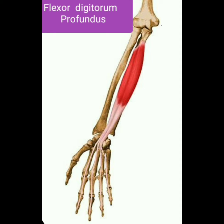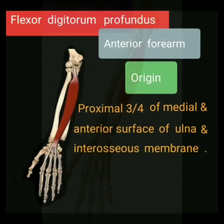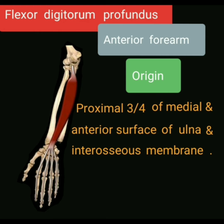Assalamu alaikum, welcome to my new video. In this video I will discuss the anatomy of flexor digitorum profundus muscle. The flexor digitorum profundus muscle originates from the proximal three-quarters of the medial and anterior surface of the ulna and the interosseous membrane.